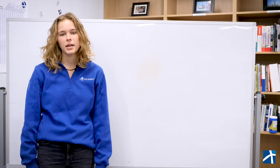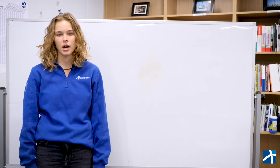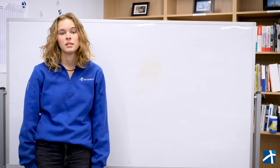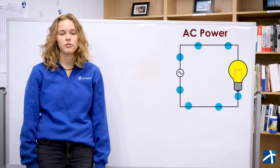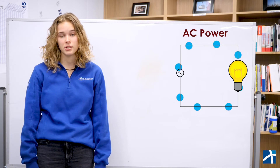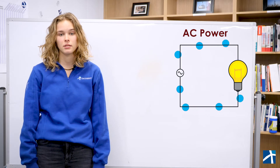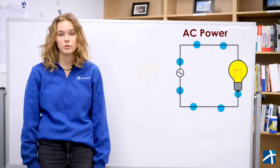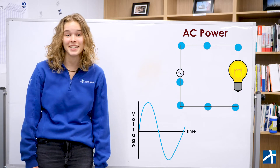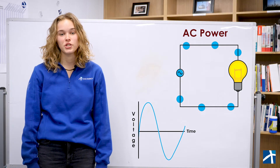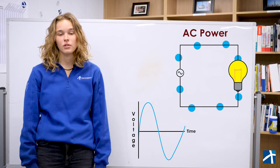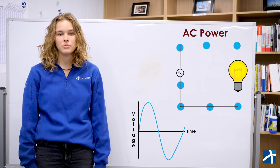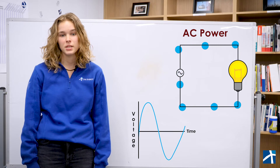Most of the appliances in our home need DC power to operate, like a cell phone or even a refrigerator. In AC power, the current actually switches directions as it travels. In the US, AC systems are designed so the current switches directions 60 times a second. And because voltage is directly related to the current, the voltage alternates as well. The power that comes directly out of the outlets in our homes is AC.